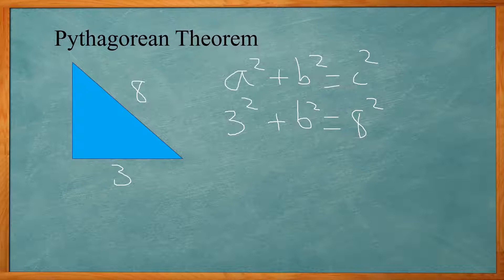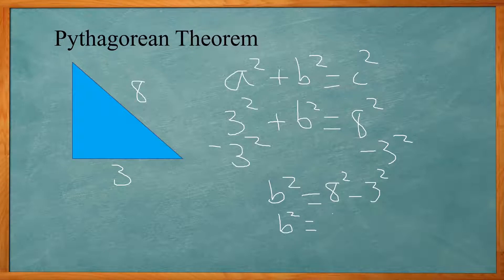I want to get b squared by itself, so I'm going to subtract 3 squared from both sides. That leaves me with b squared equal to 8 squared minus 3 squared. 8 times 8 is 64, 3 squared is 9, that's going to give me 55. So b squared equals 55, and I need to take the square root of both sides to get b by itself.